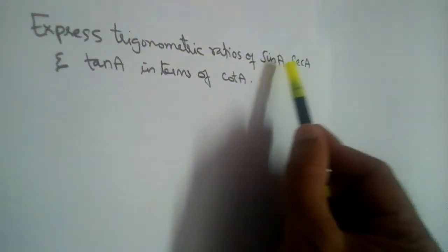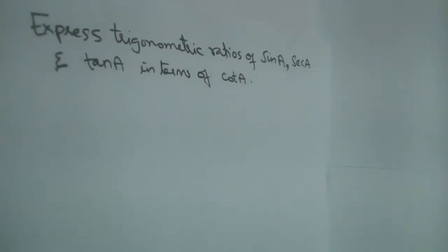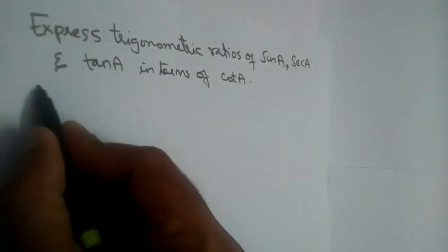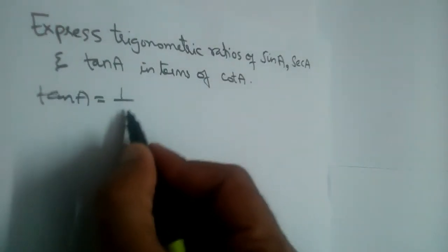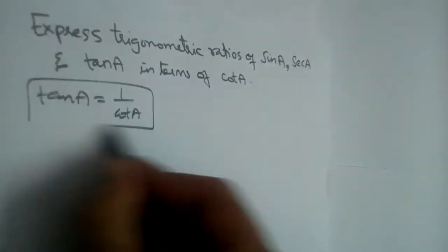Express trigonometric ratios of sin A, sec A, and tan A in terms of cot A. First, let us write tan A in terms of cot A, which is very easy. So tan A equals 1 by cot A. This is done.